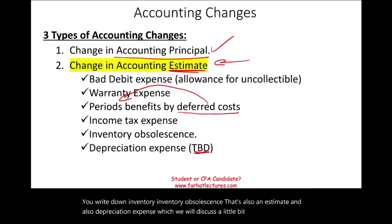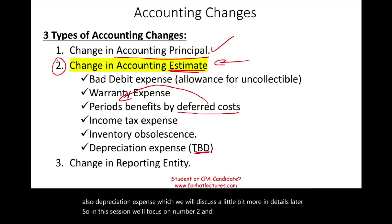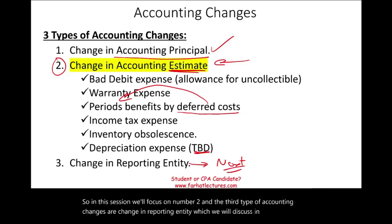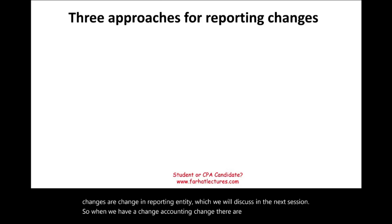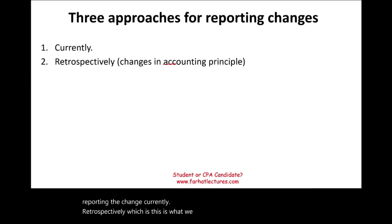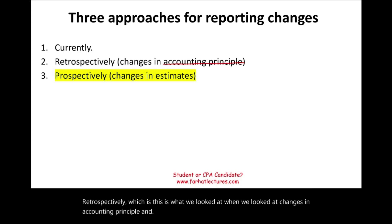So in this session we'll focus on number two — change in accounting estimate. The third type of accounting change is change in reporting entity, which we will discuss in the next session. When we have an accounting change, there are three approaches for reporting the change: currently, retrospectively — which is what we looked at with changes in accounting principle — and prospectively. Prospectively is used when we have a change in estimate.